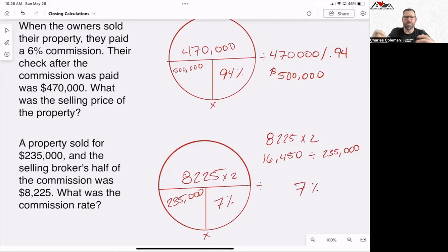So this is how you would use the T-bar method to figure out the equations for any type of math problem where you're given two numbers. You're even given the full number, the part of a number, or the percentage or the rate. That's how you use the T-bar method to figure out closing calculations for your PSI real estate exam. Stay tuned next week for a brand new video as we prep you to get past your real estate exam.